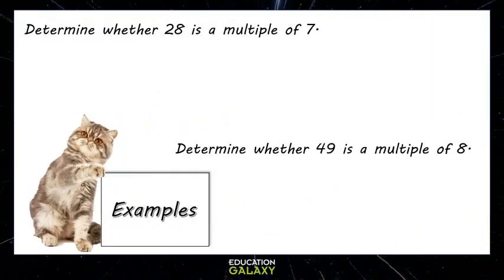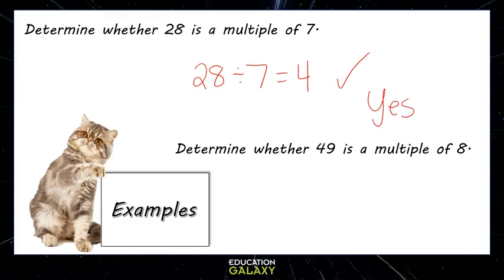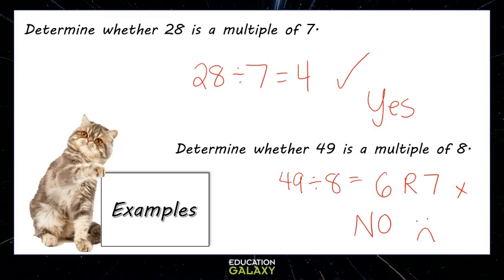Let's try some examples. Determine whether 28 is a multiple of 7. If we divide 28 by 7, it equals 4 — it goes in evenly, so the answer is yes. The second example: determine whether 49 is a multiple of 8. If we divide 49 by 8, it goes in 6 times, but that's only 42, and there's a remainder of 7. So it doesn't go in evenly — therefore, 49 is not a multiple of 8.